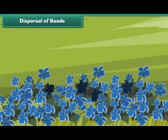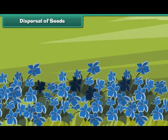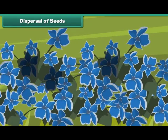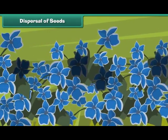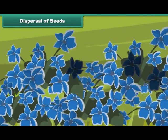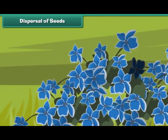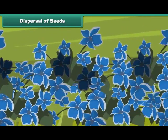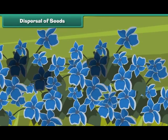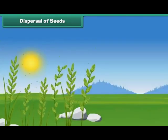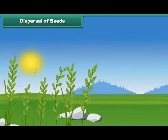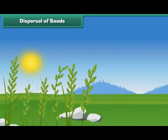Dispersal of seeds: if all the seeds grew near the parent plant, there would certainly be a shortage of space, water, minerals and sunlight, so all the plants would not grow properly and most of them would naturally die. It is therefore necessary that seeds should be scattered over large distances. Nature has arranged some methods of seed dispersal in many ways.